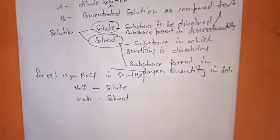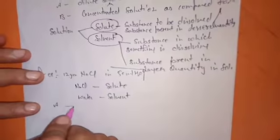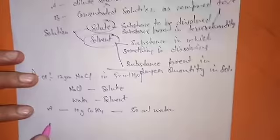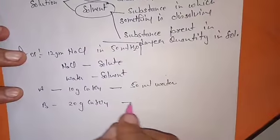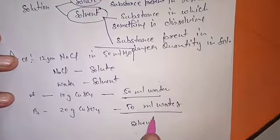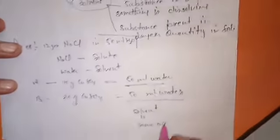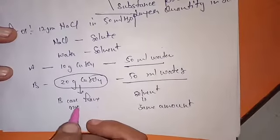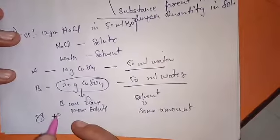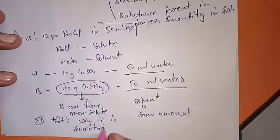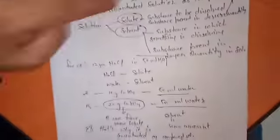Now let's discuss the difference between groups A and B. Group A took 10 g of copper sulphate dissolved in 50 ml of H₂O, but group B had 20 g of copper sulphate in 50 ml of H₂O. The solvent amount is the same in both cases, but group B has more solute — that is why it is concentrated as compared to A.